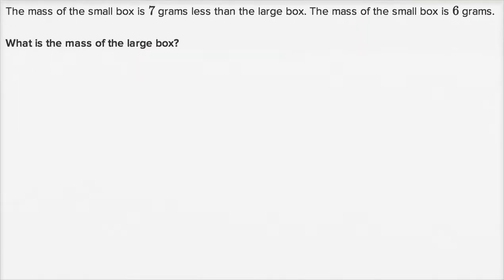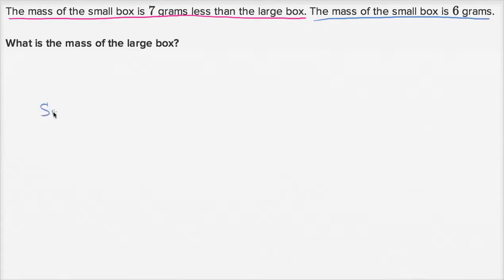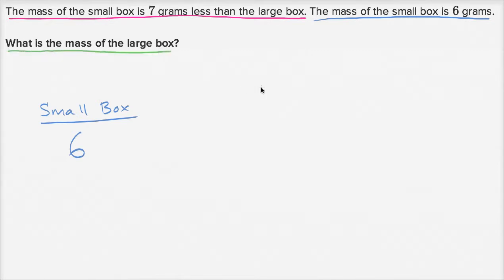They tell us the mass of a small box is seven grams less than the large box. The mass of the small box is six grams. So the small box has a mass of six grams, and we need to figure out what is the mass of the large box. This is what we need to figure out — it's a question mark.